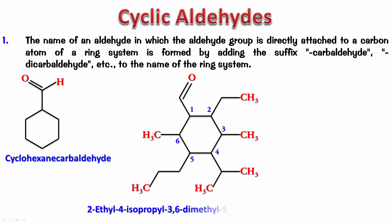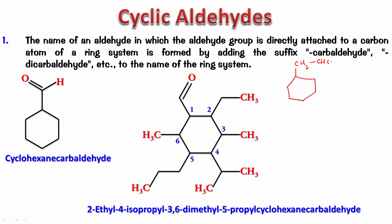What happens if the CHO is not directly attached to the ring but is outside the ring? In that case, the parent chain is the chain containing the CHO, and the ring becomes a substituent. The parent becomes ethanal, making the compound cyclohexyl ethanal. No position number is written for the aldehyde carbon because it is automatically carbon one, and in ethanal there are only two carbons.